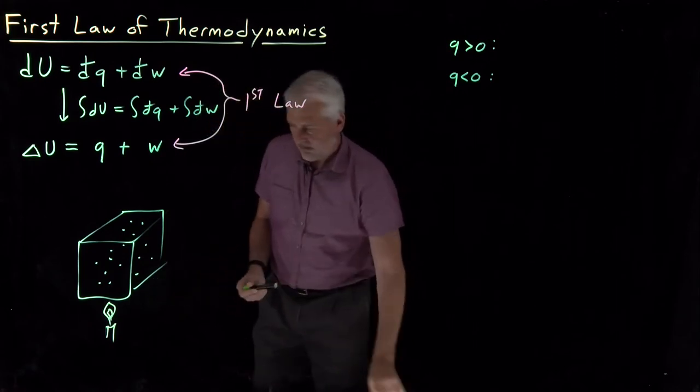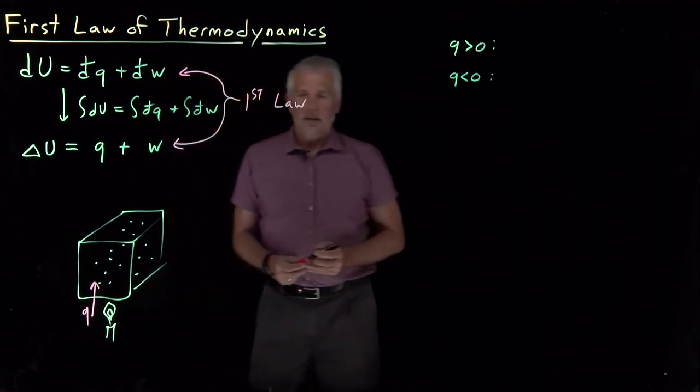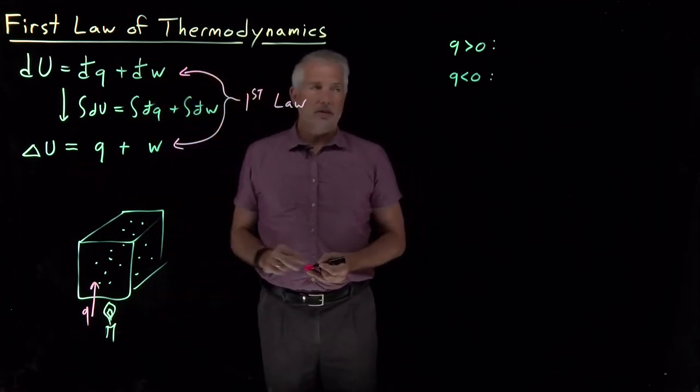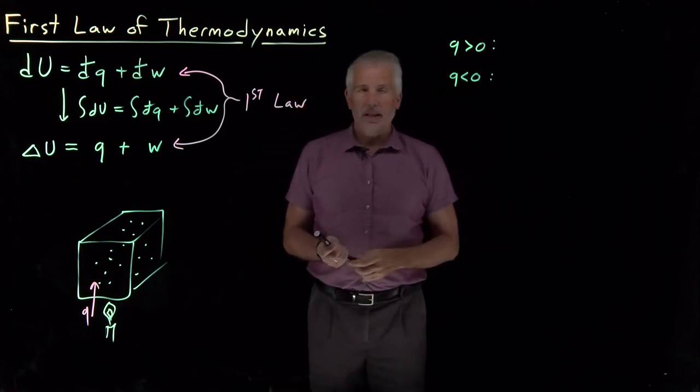In this sense, I'm transferring heat into the system. That will increase the energy of the system. So when Q is a positive number, that represents a transfer of heat into the system.